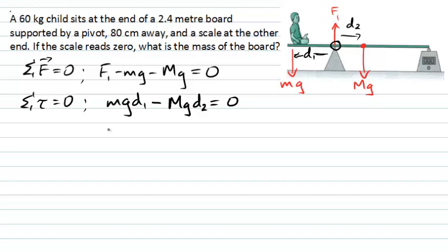And now I can rearrange this equation. Mg D2 must equal small mg D1. We can see that g will cancel on both sides, and I can just write down that this mass here of the board will be the mass of the child multiplied by D1 over D2.